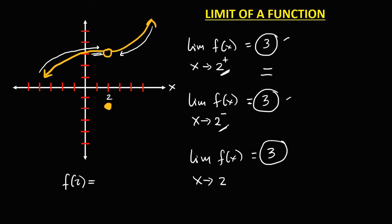Just look for the shaded circle — this is the shaded circle — so if x is equal to positive 2, y is equal to negative 2. Therefore f of 2 is negative 2.